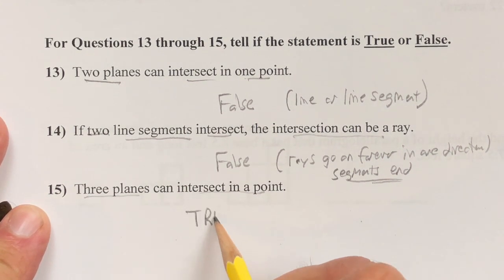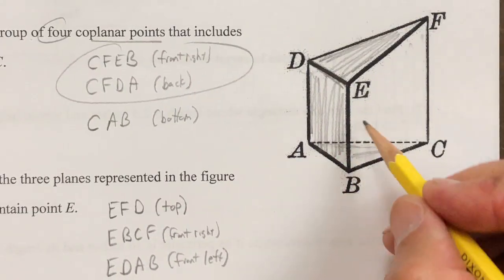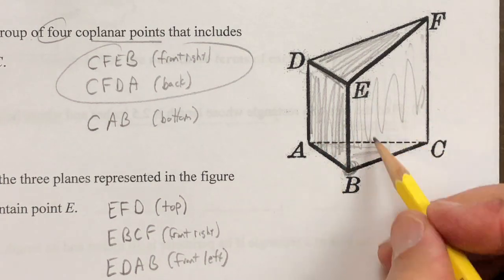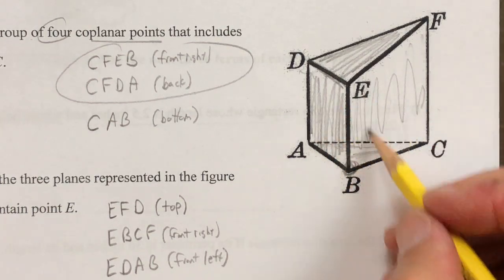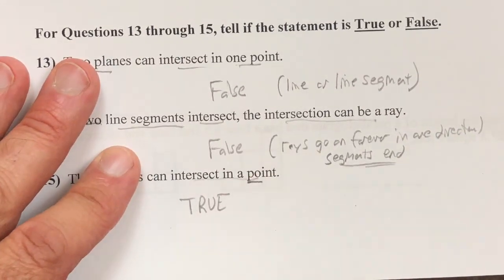And here at number 15, we see this is true. So we look back up at the figure. We can look at the bottom plane, the front right, and the front left plane. They all intersect at point B. We can look at the left, right, and top plane all intersect at point E. That makes that true.